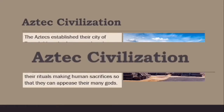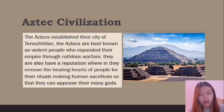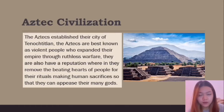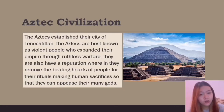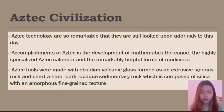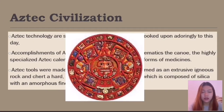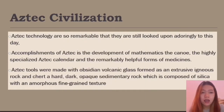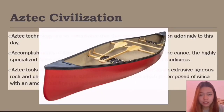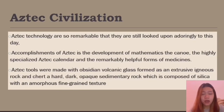Next is the Aztec civilization. The Aztecs established their capital Tenochtitlan. The Aztecs are best known as a warlike people who expanded their empire through ruthless warfare. They have a reputation for removing the beating hearts of people in rituals, making use of human sacrifices to appease their many gods. Aztec technology is so remarkable it is still looked upon admiringly today, with accomplishments including the development of mathematics, the canoe, a highly specialized calendar, and remarkable forms of medicine.